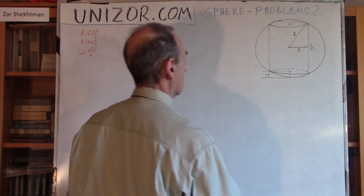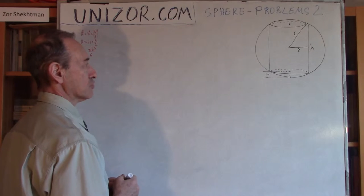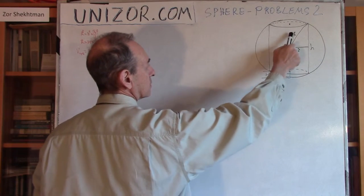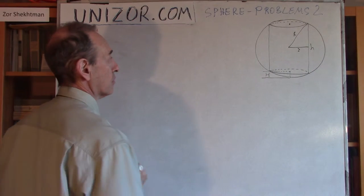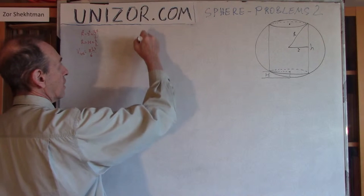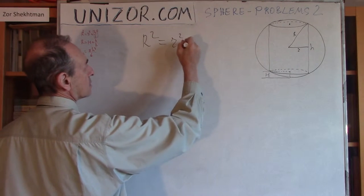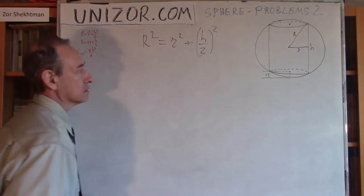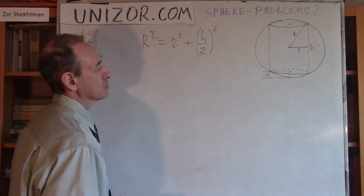Now, what do I know just looking at this picture? Well, first of all, obviously, I can relate capital R, lowercase r, and h using the Pythagorean theorem, right? So, R square is equal to lowercase r square plus half of the h square. That's one equation, right?